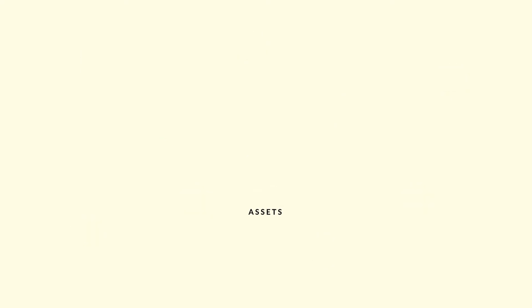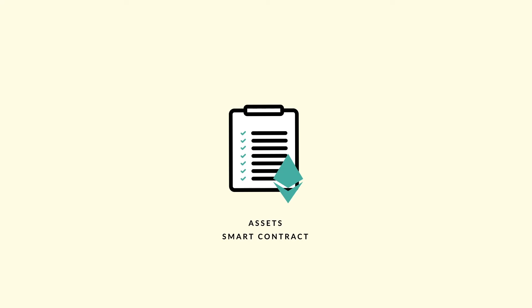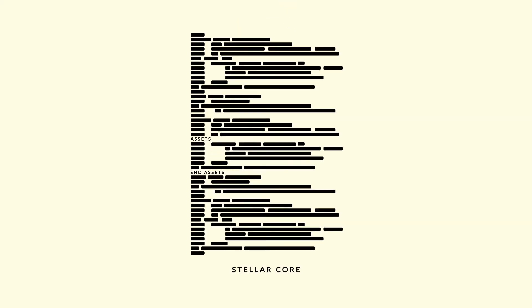Using Stellar, there's no need to create a custom, error-prone smart contract to issue an asset. Instead, the concept of an asset is built into the open-source software that powers the Stellar Network, making the process of issuing assets more secure and much easier.